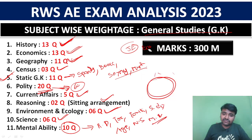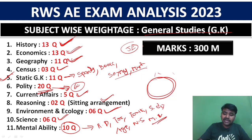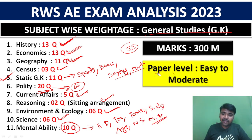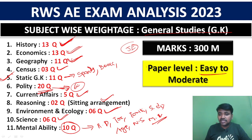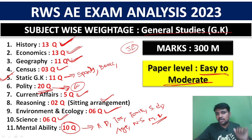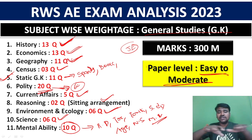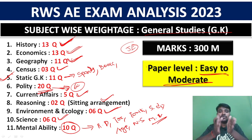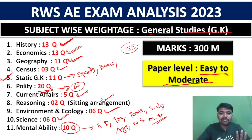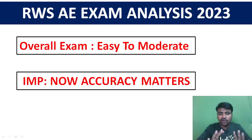This GS paper is of 300 marks. The paper level is easy to moderate — somewhere in between easy and difficult. Overall, it is an easy to moderate paper.